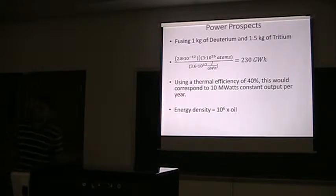If you have an idea of what fusion fuel can produce, say if you combine one kilogram of deuterium and one and a half kilogram of tritium, this would produce approximately 20 to 30 gigawatt hours of thermal power. If you had a future power plant with thermal efficiency of 40%, you could use two and a half kilograms of fuel to produce about 10 megawatts constant output per year. The energy density of that fuel is about a million times higher than chemical fuels.